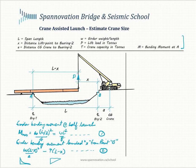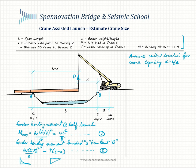Now we'll make an assumption that the critical location for crane capacity occurs at a distance x equal to L over 4. In other words, when three quarters of the span has been launched, this is where we reach the critical capacity of the crane, and we'll call this equation 3.